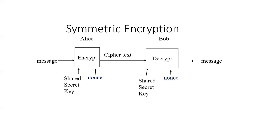Originally, cryptography was focused on encryption to send secret messages. The original approach — symmetric encryption — means Alice and Bob share a secret key. Alice encrypts a message using the shared secret key, sends it to Bob, and Bob decrypts it using his copy of that key. For example, Alice could encrypt "I love Ethereum," produce ciphertext, and Bob would decrypt it using his copy of the shared secret key to read the message.